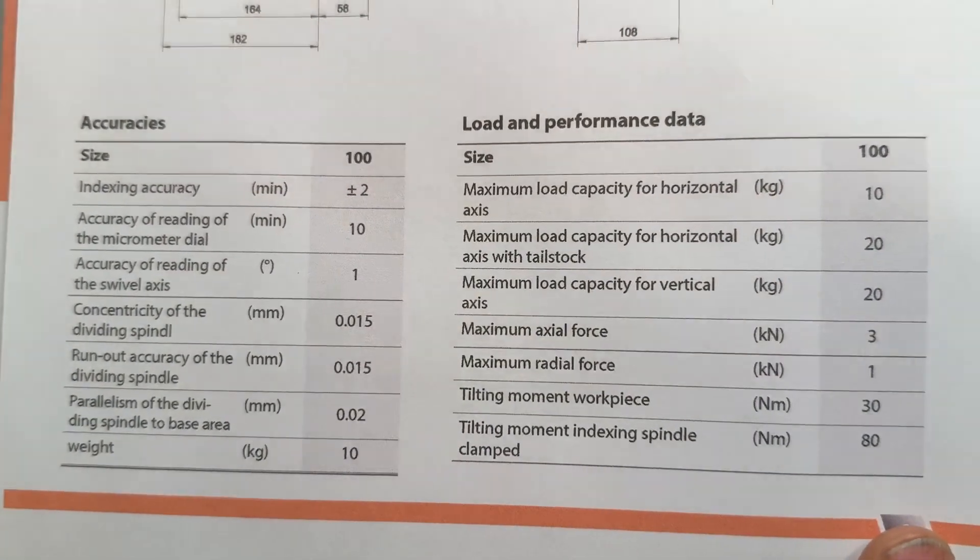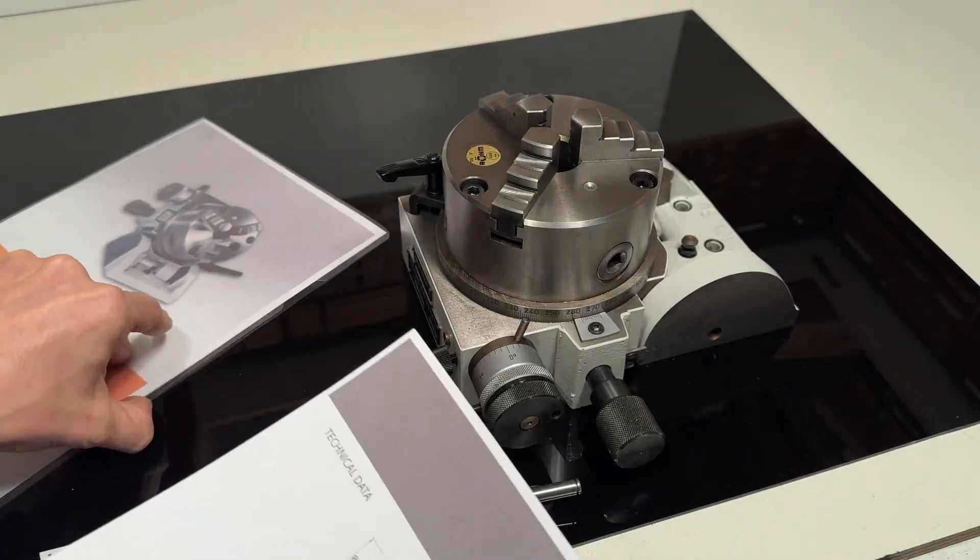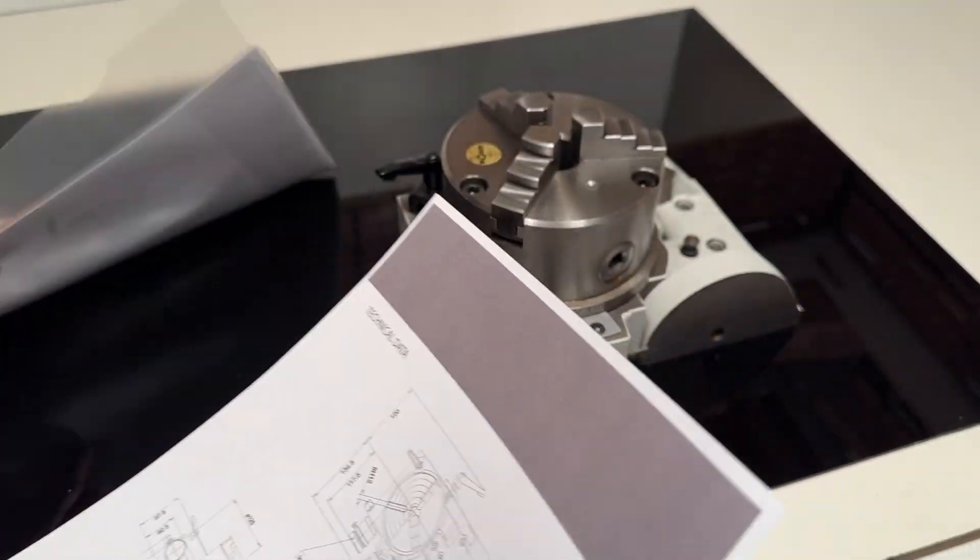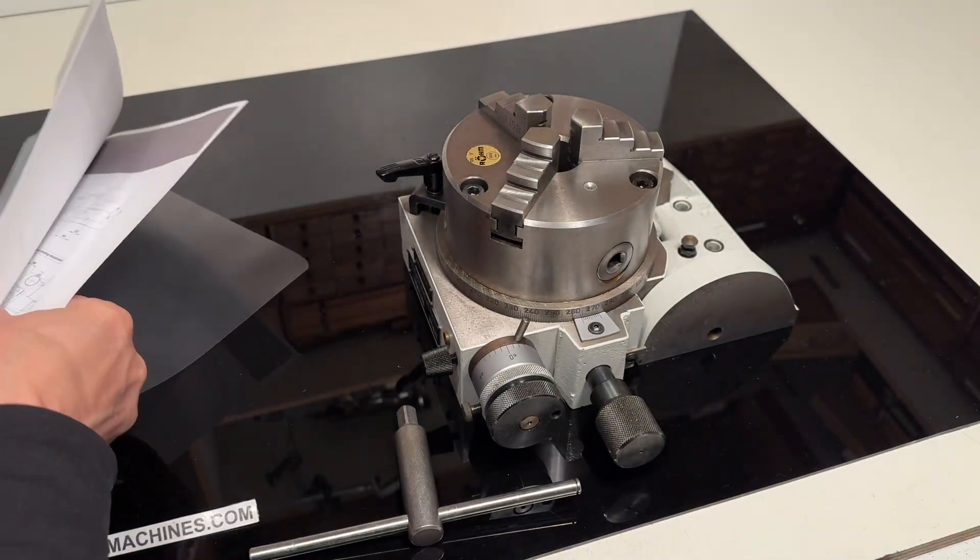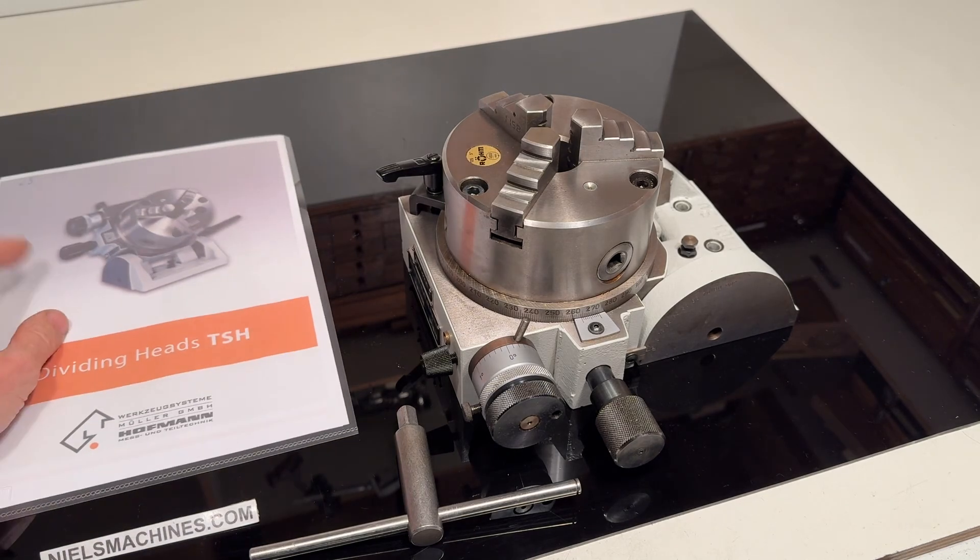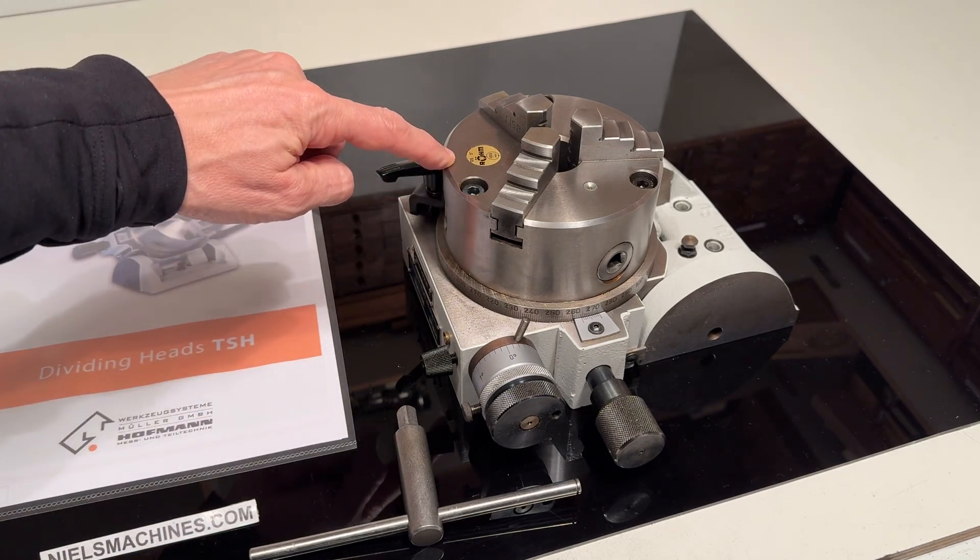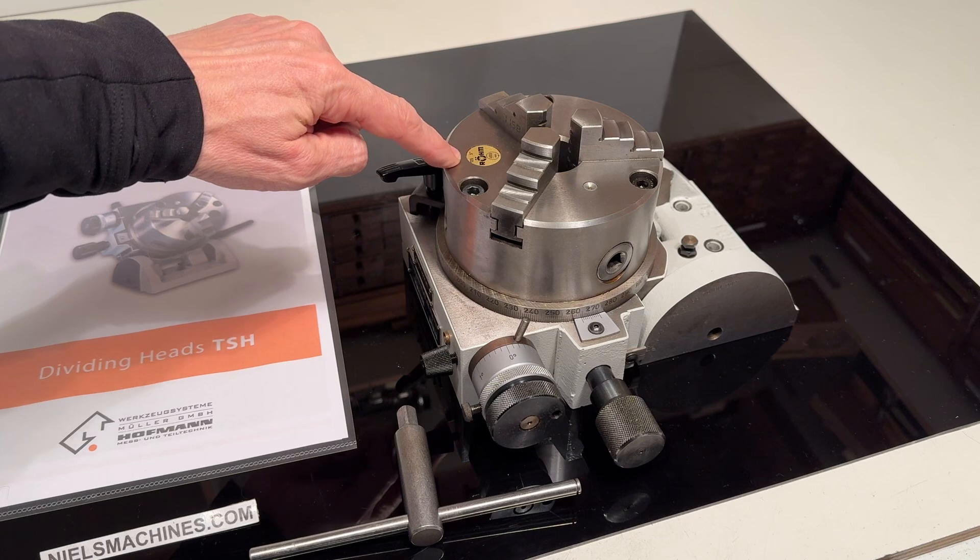Here it already is. This one comes with a 3-jaw chuck and the outside diameter of this 3-jaw chuck is 125 with its brand is Rome.